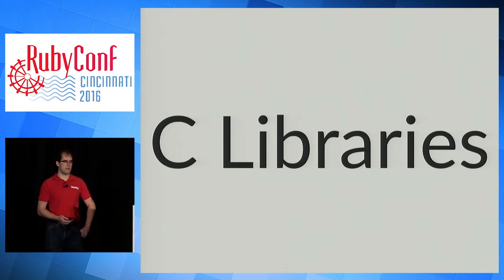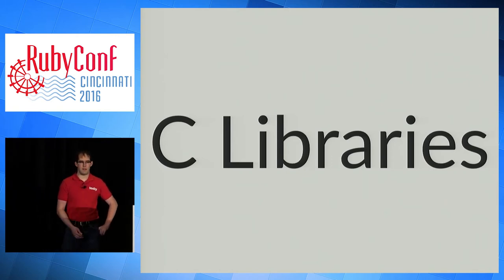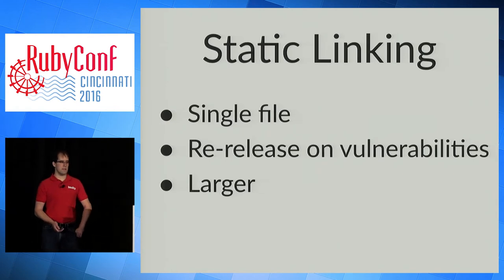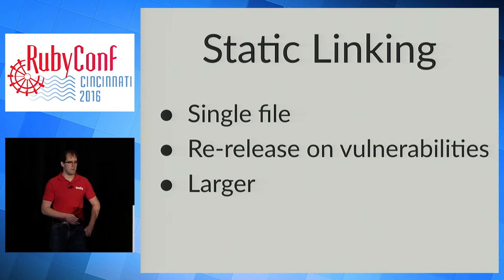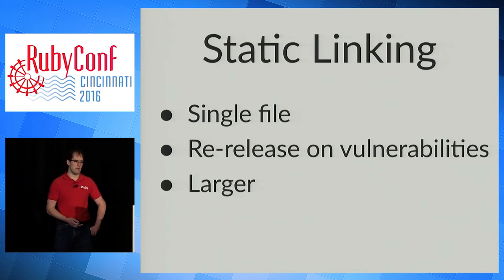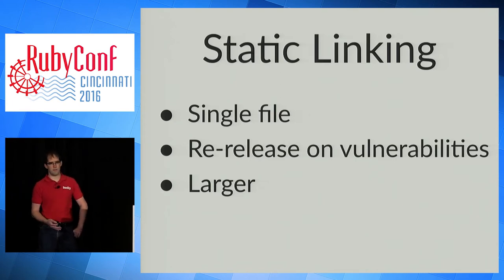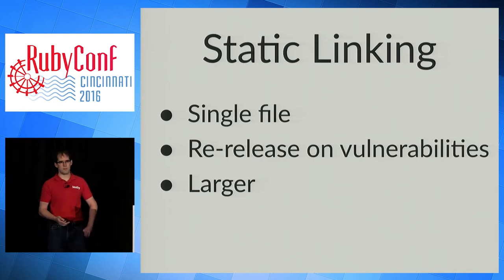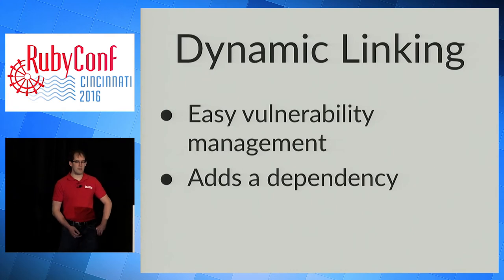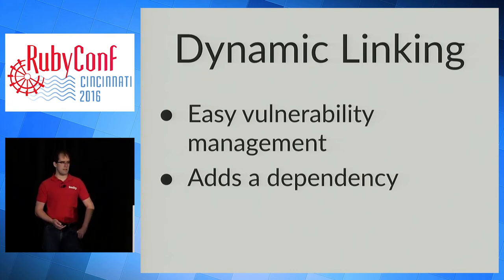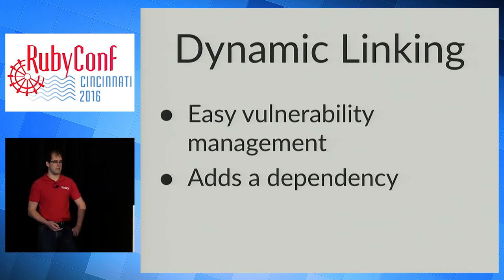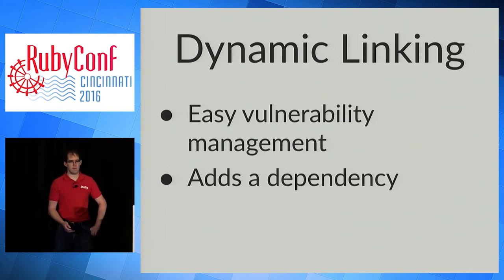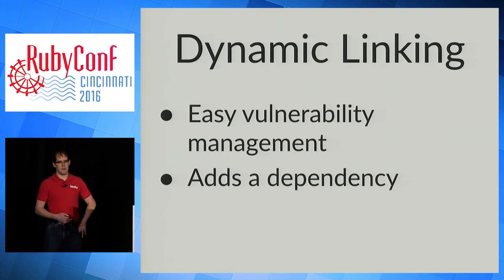You'll likely need to use a C library as a dependency of an MRuby gem in your project, and there are two options. The first is static linking, which embeds the library inside your command line tool, keeping it a single-file executable. The advantage is you don't need to provide instructions for installing the correct C library, but the downside is you need to re-release your command if there are any vulnerabilities in those C libraries, and it makes your executable a little larger. The second option is dynamic linking — the advantage is vulnerability management is easier, since users upgrade their own libraries. The disadvantage is it adds an external dependency, so you're no longer truly a single file.